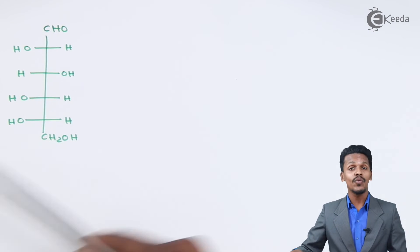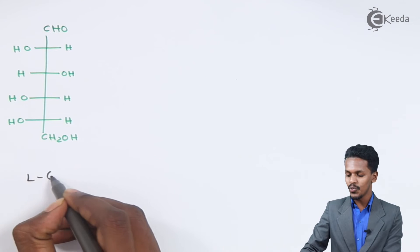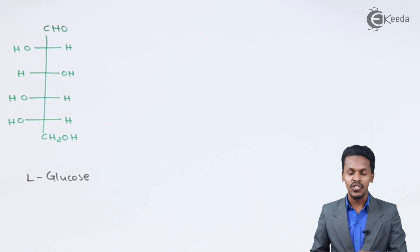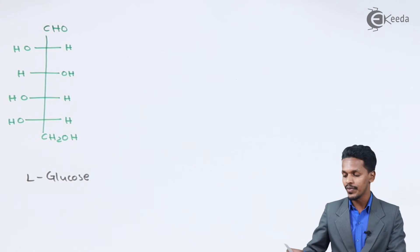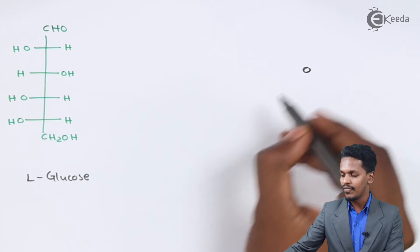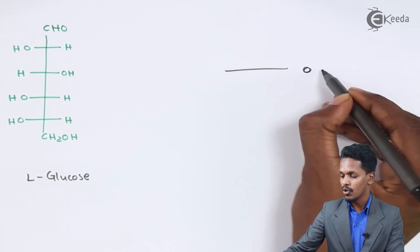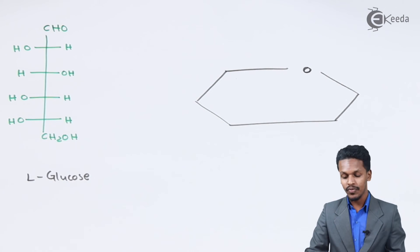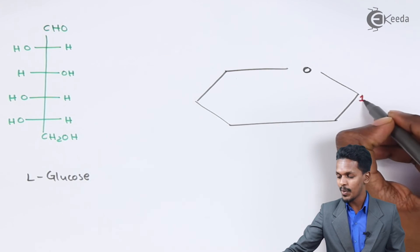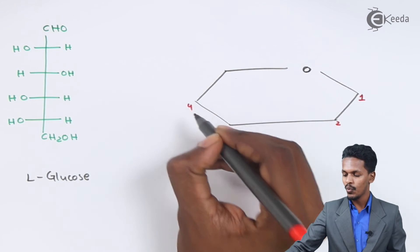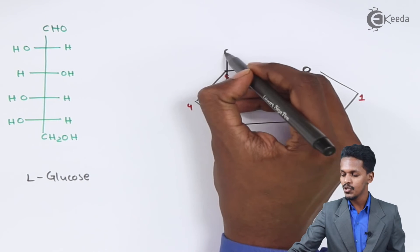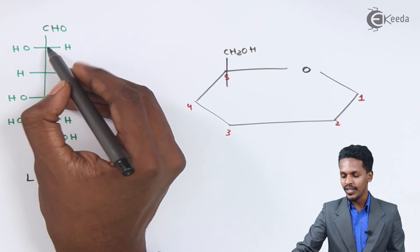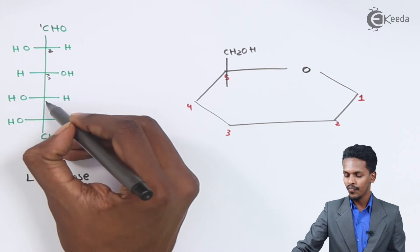Now let me give an example of L-glucose. This is the Fischer projection formula for L-glucose. To write the Haworth projection formula, the criteria are the same: oxygen is at the upper right, and we number the carbons 1 through 5, with CH₂OH placed on the side where oxygen is present.